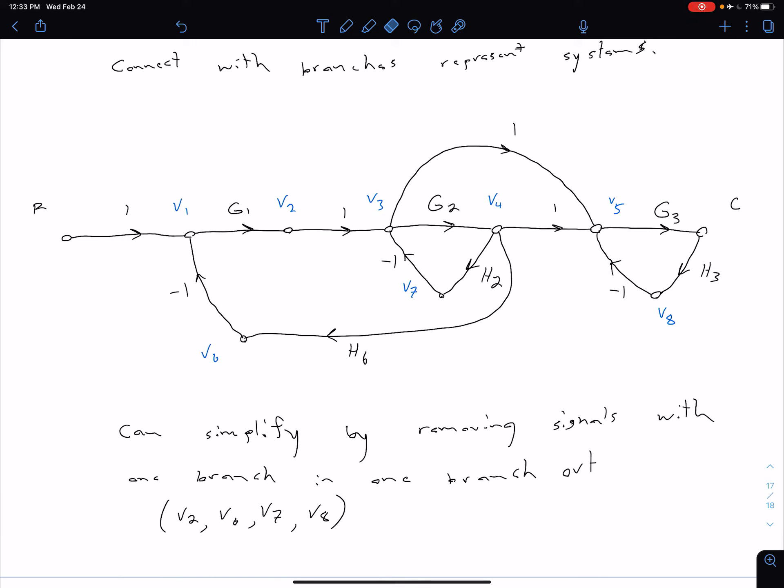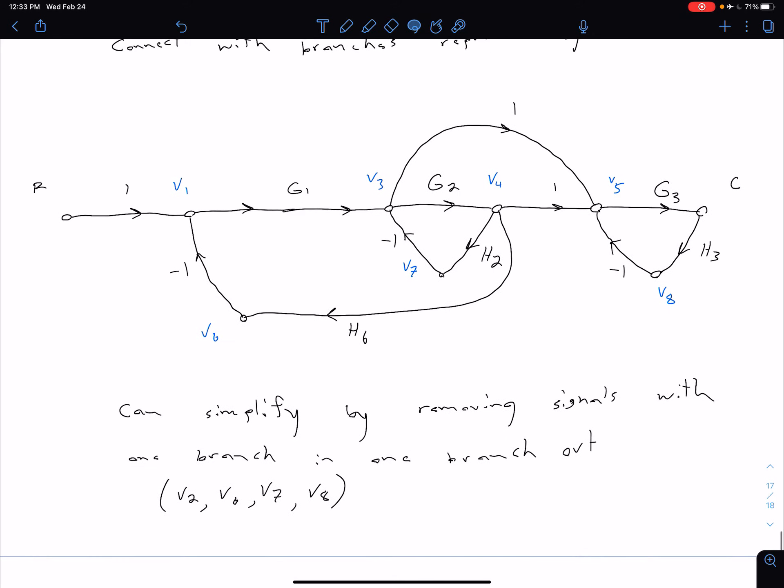And then this is just G1 times one. So that whole thing there is just G1. We can do a similar thing in those three feedback loops.